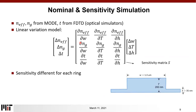Extracting all of the information from our test structure — the effective index, group refractive index, and coupling — and comparing them to the nominal case, we can simply relate to the actual geometry of the fabricated device versus the design geometry, based on what we call the sensitivity matrix. This sensitivity matrix specifies how the effective index, group index, and coupling vary with changes to the geometric components: width, thickness, and height. However, there are some challenges for this extraction.